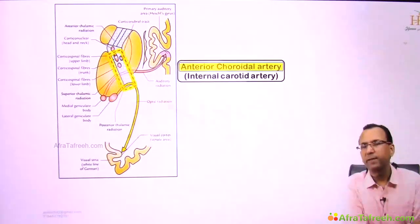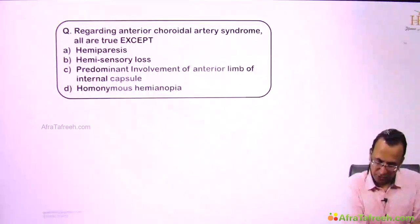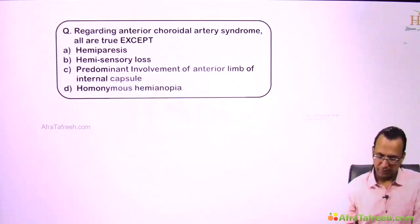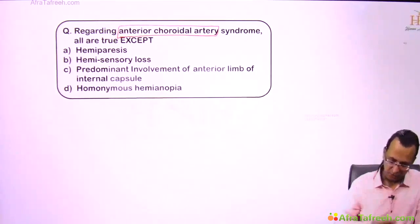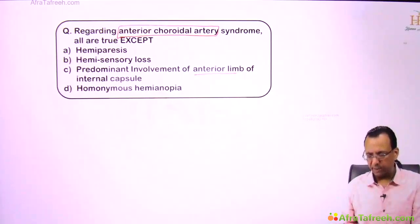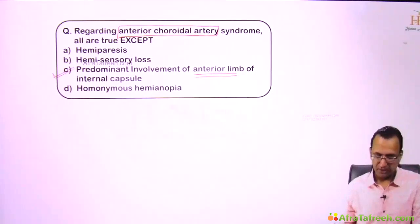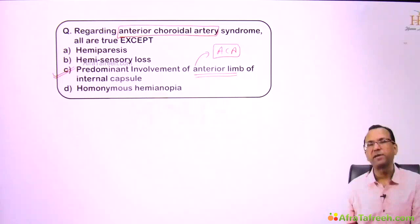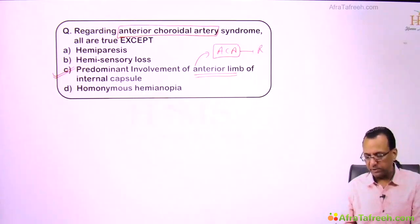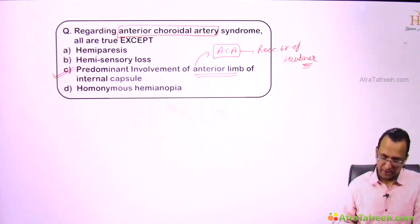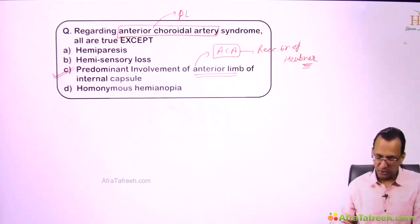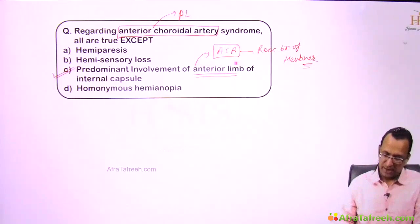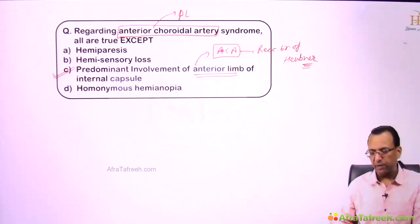The anterior limb of the internal capsule is supplied by the recurrent artery of Heubner, a branch of the anterior cerebral artery — not the anterior choroidal artery. That is why in anterior choroidal artery syndrome, there is no problem with the anterior limb. The answer is that homonymous hemianopia is present, and sensory motor loss is on the upper limb, trunk, and lower limb — not the face.